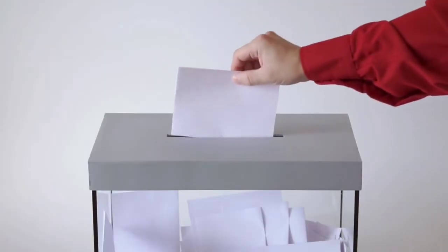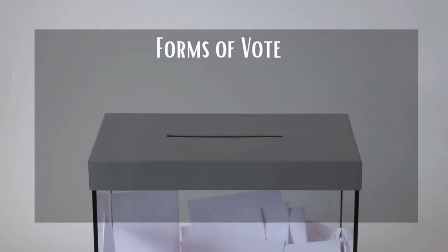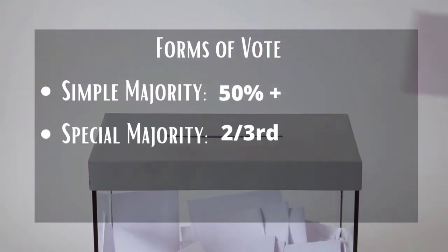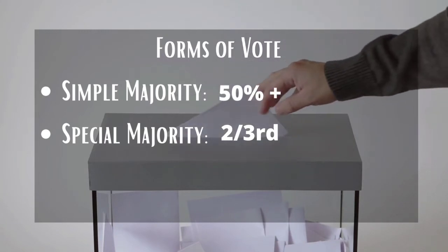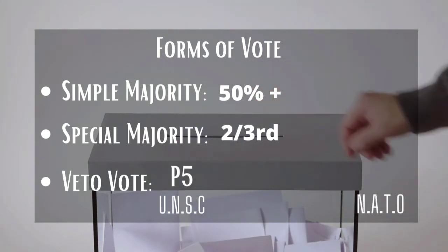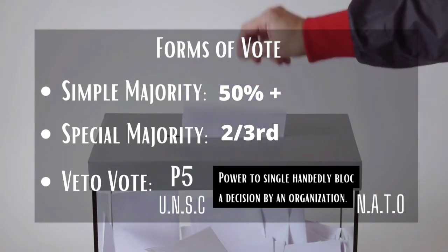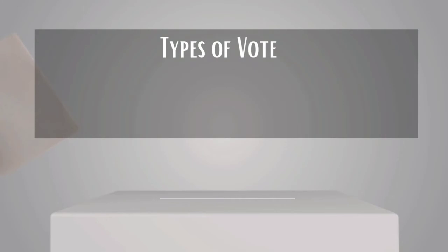Voting results in any parliamentary procedure has three important types. If more than half of the committee votes are in favour of a document or a motion, it is called a simple majority. If more than two-thirds of the committee votes in favour, it is called a qualified or special majority. A veto vote exists in the UN Security Council with the P5 or Permanent Five members. A veto vote is the power to single-handedly block a decision by an organisation — if a nation decides to use veto power, irrespective of the majority, any decision the committee is willing to take will be blocked. For voting on substantial matters like working papers and draft resolutions, there are two methods.